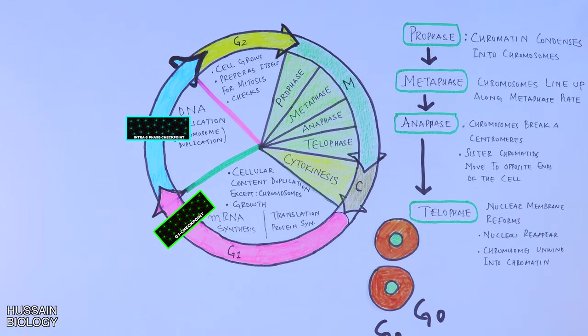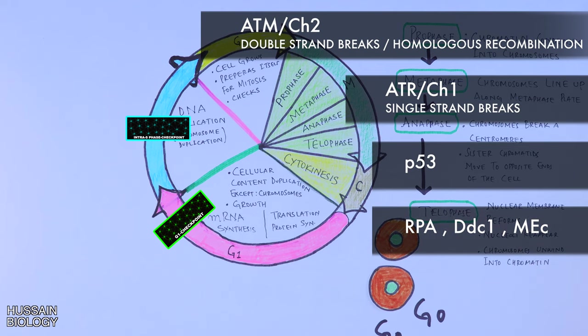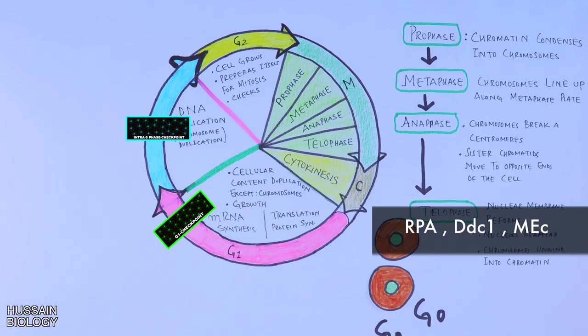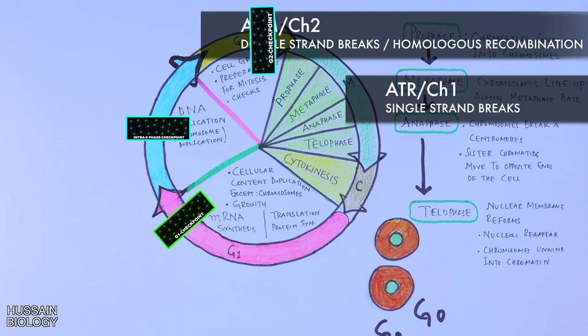Then we have the intra-S checkpoint, which is done by the same proteins—ATR, ATM—for DNA errors and breaks. But in yeast, it's mediated by RPA proteins and also by DDC protein, MEC protein, and many other proteins. Moving towards the third checkpoint, which is the G2 checkpoint, which is mediated by the same proteins like ATM and ATR proteins to check for DNA errors.